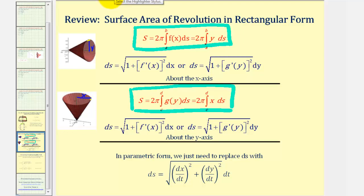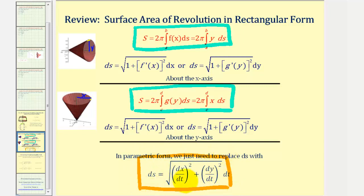The only new piece now is that because we have parametric equations, we have to perform a substitution for differential s with a differential of arc length, where we now know differential s is equal to this. If we perform this substitution for differential s, we have our surface area of revolution formulas when given parametric equations.